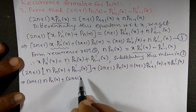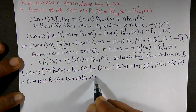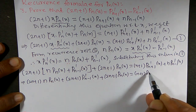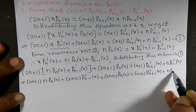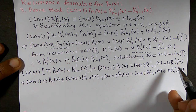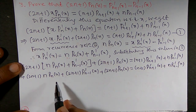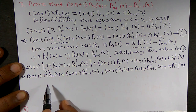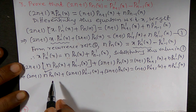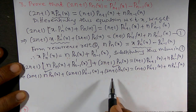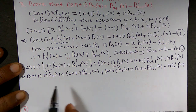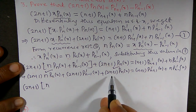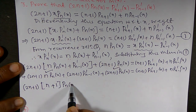Continuing the expansion: (2n+1)n · Pₙ(x) + (2n+1) · P'ₙ₋₁(x) + (2n+1) · Pₙ(x) = (n+1) · P'ₙ₊₁(x) + n · P'ₙ₋₁(x). Now I want to rearrange the terms and look for common factors. I want to consider (2n+1) · n · Pₙ(x) and search for other terms containing (2n+1) · Pₙ(x).